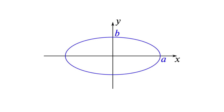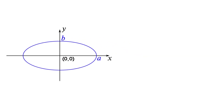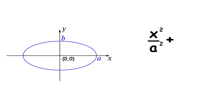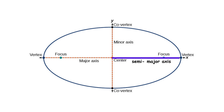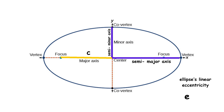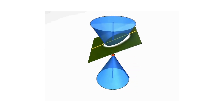An ellipse can also be thought of as a stretched-out circle. The equation for an ellipse centered at the origin with width 2a and height 2b is x squared over a squared plus y squared over b squared equals 1. The farthest points from the center are the vertices; the closest are the co-vertices. A line segment from the center to a vertex is a semi-major axis, and one to a co-vertex is a semi-minor axis. The distance c from the center to a focus is the linear eccentricity, and e equals c over a is the eccentricity. Like a parabola, an ellipse is also a conic section.